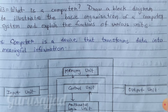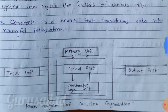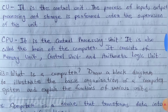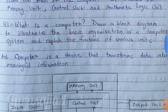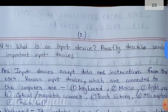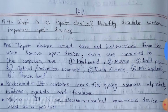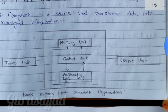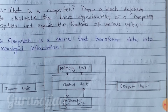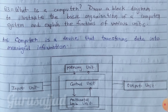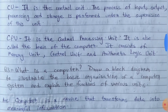For the last part of question 3, you have to explain the functions of various units. The functions of ALU, CU, and CPU have been given above. The memory unit, control unit, and ALU are at the top of the functions, and the input and output units can be seen in the diagram.